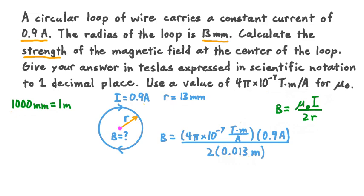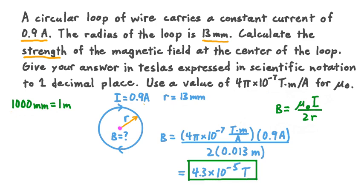Now we're ready to calculate the field strength B. When we do, to one decimal place, we get a result of 4.3 times 10 to the negative 5th teslas. This is the magnitude of the magnetic field at the very center of our circular loop.